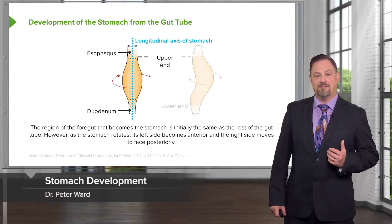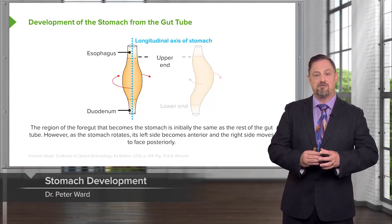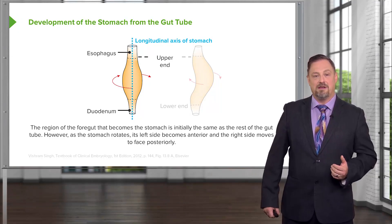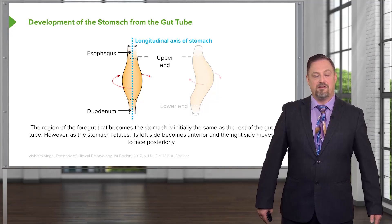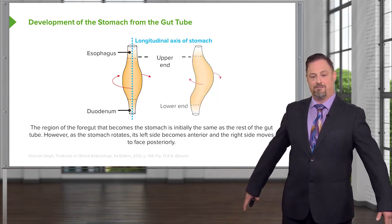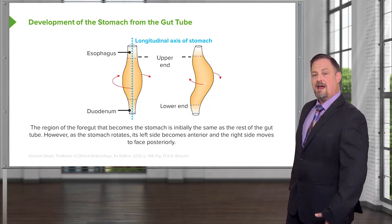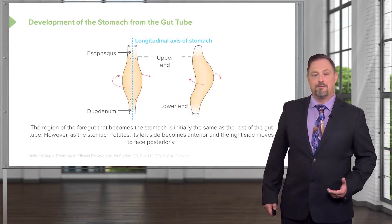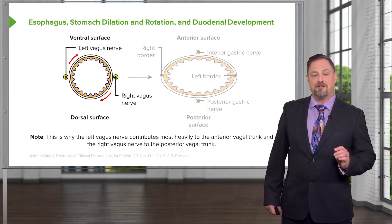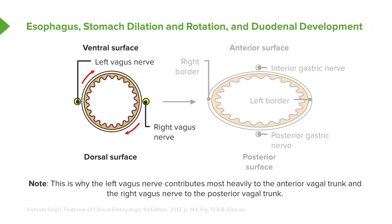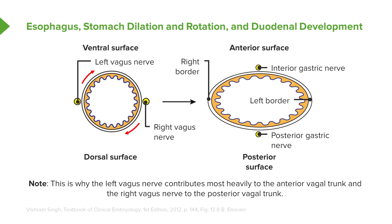We'll now move on to how the stomach develops from a simple tube into its interesting C-shaped and ballooned state. The stomach begins by rotating such that its left side moves anteriorly and its right side moves posteriorly — so something like this happens. As that occurs, the stomach is going to twist around its longitudinal axis and will then start expanding posteriorly and to the left. The stomach has a left vagus nerve and a right vagus nerve traveling down the esophagus to reach it, and as it rotates, it's going to pull that left vagus nerve anteriorly and the right vagus nerve posteriorly, creating their contribution to the anterior and posterior gastric nerves respectively.